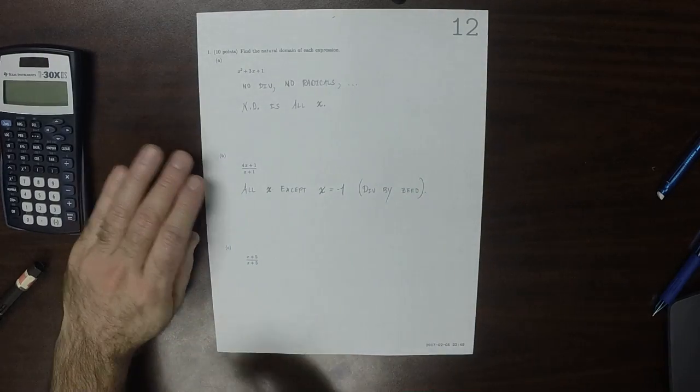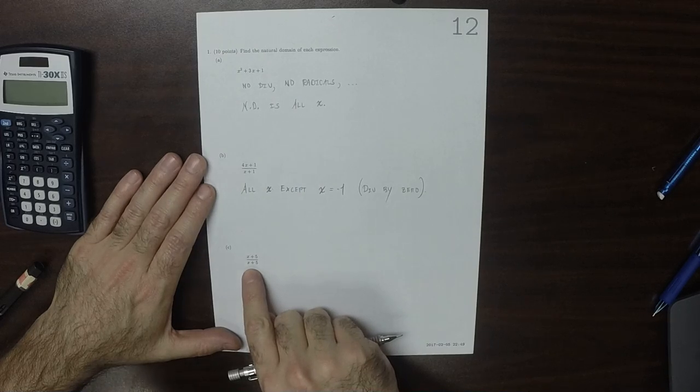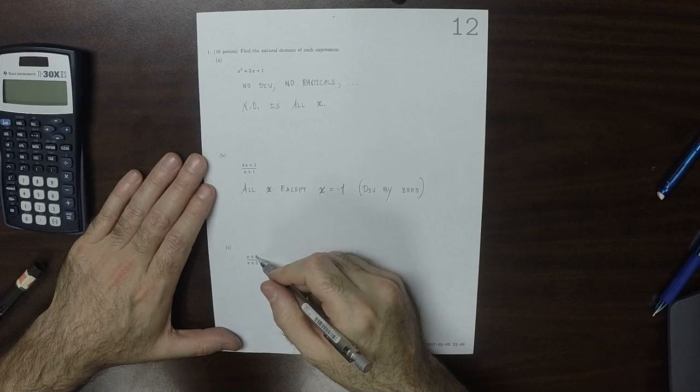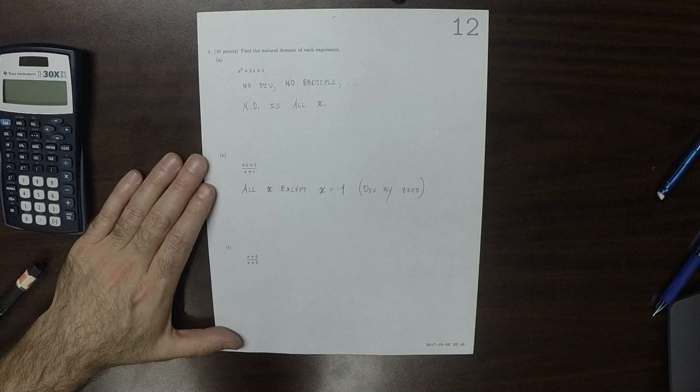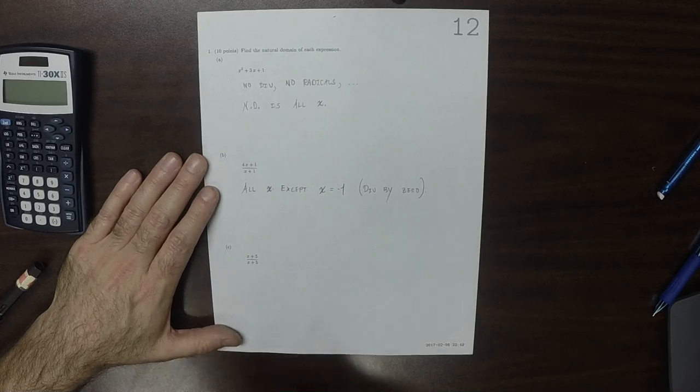Now, some students will be tempted to think they can cancel the x plus 5 over x plus 5 and think that the natural domain would be all x's.